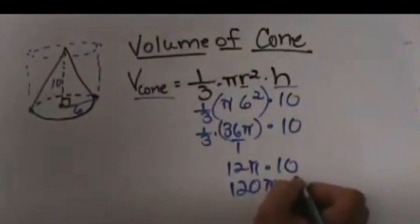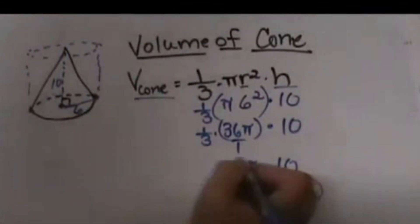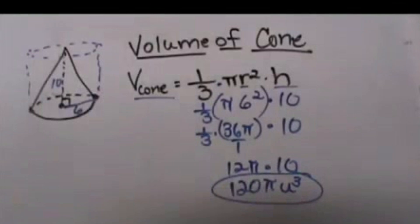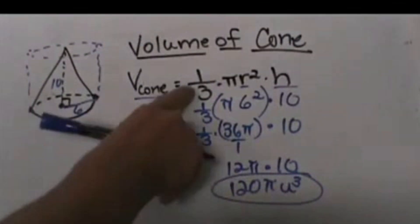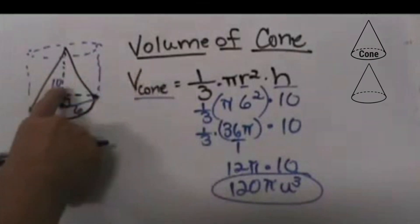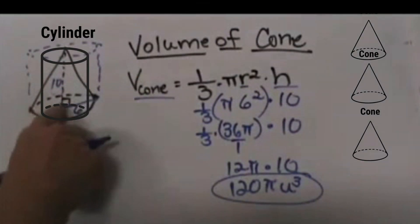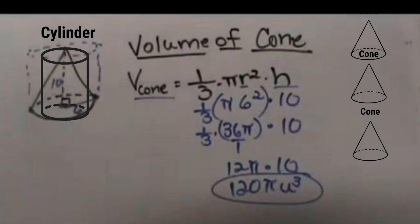Volume is 3-dimensional, so that's going to be units cubed. So whatever your unit measure is, you cube it. And that is how you find the volume of a cone. It takes three cones to fill up a cylinder with the same radius and the same height.